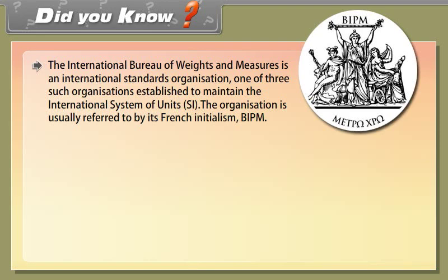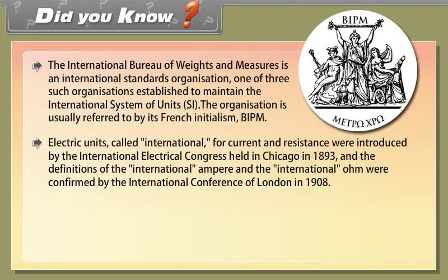Did you know: The International Bureau of Weights and Measures is an international standards organization, one of three such organizations established to maintain the International System of Units (SI). The organization is usually referred to by its French initialism BIPM. Electric units called International for current and resistance were introduced by the International Electrical Congress held in Chicago in 1893, and the definitions of the International Ampere and International Ohm were confirmed by the International Conference of London in 1908.